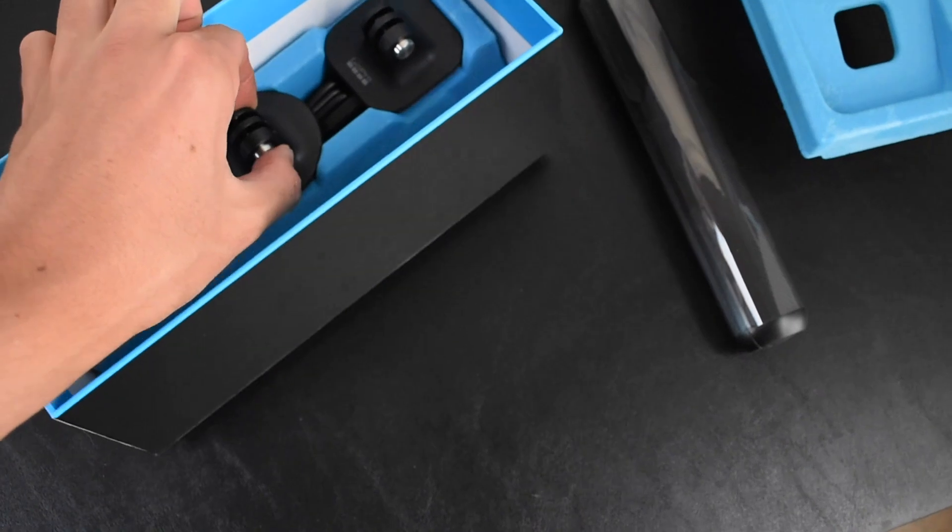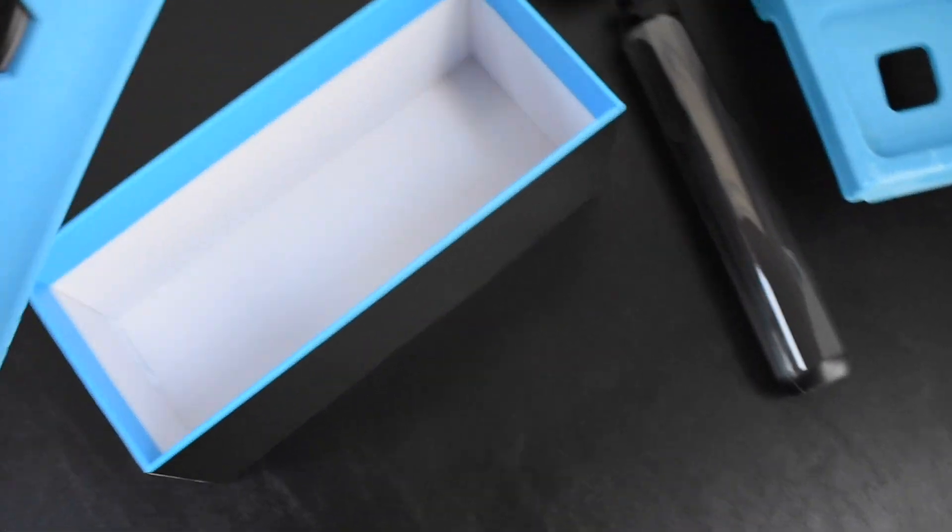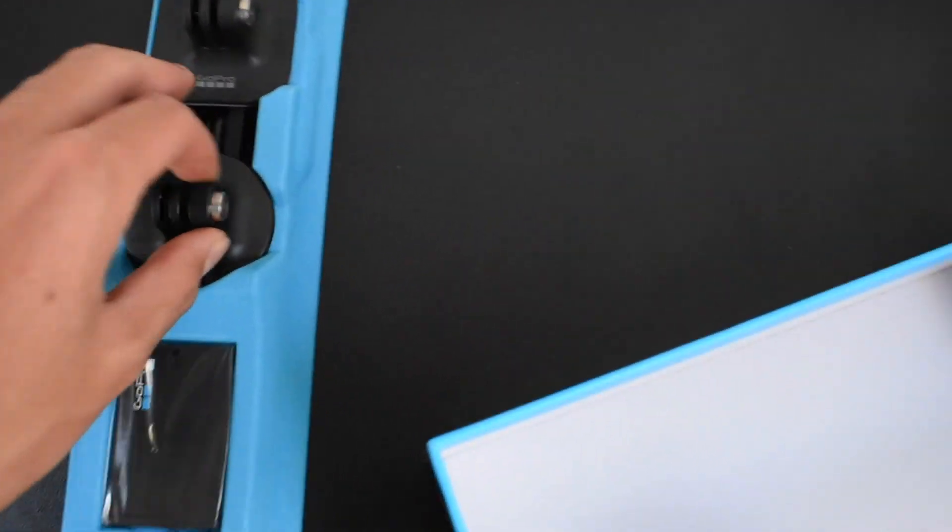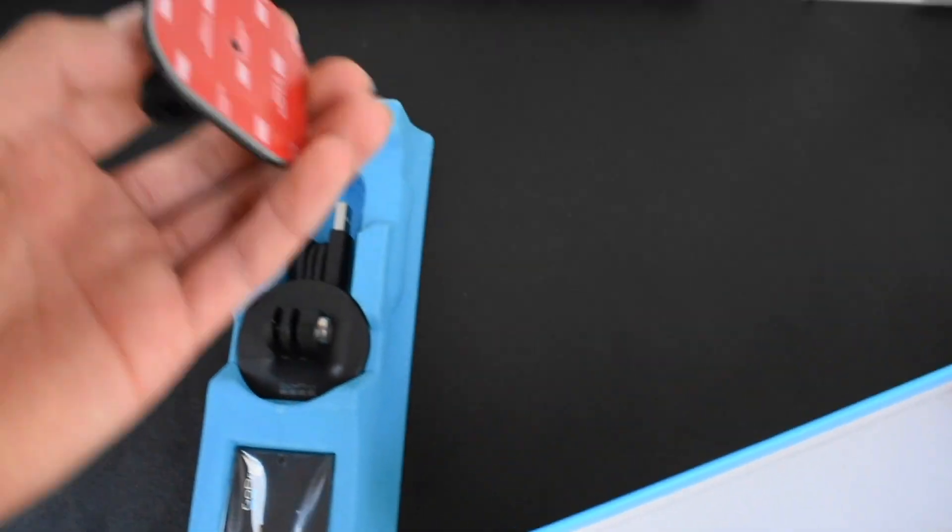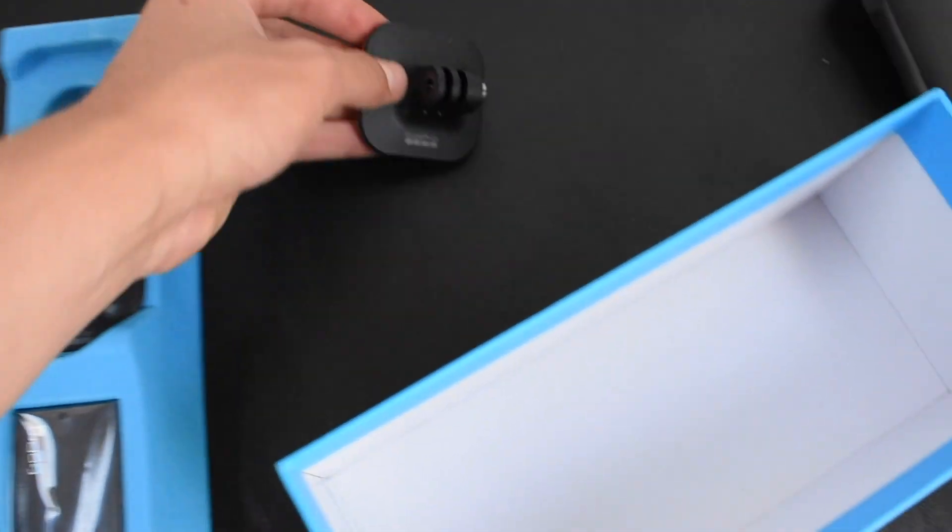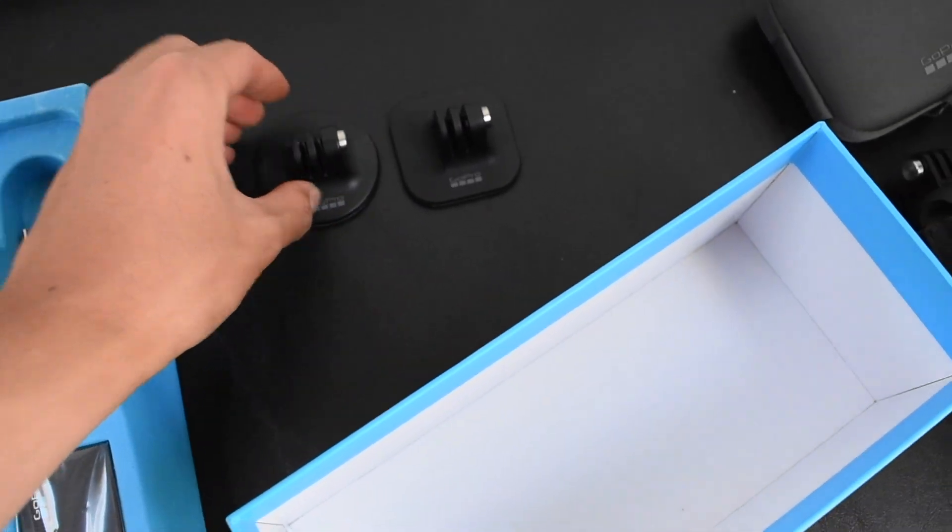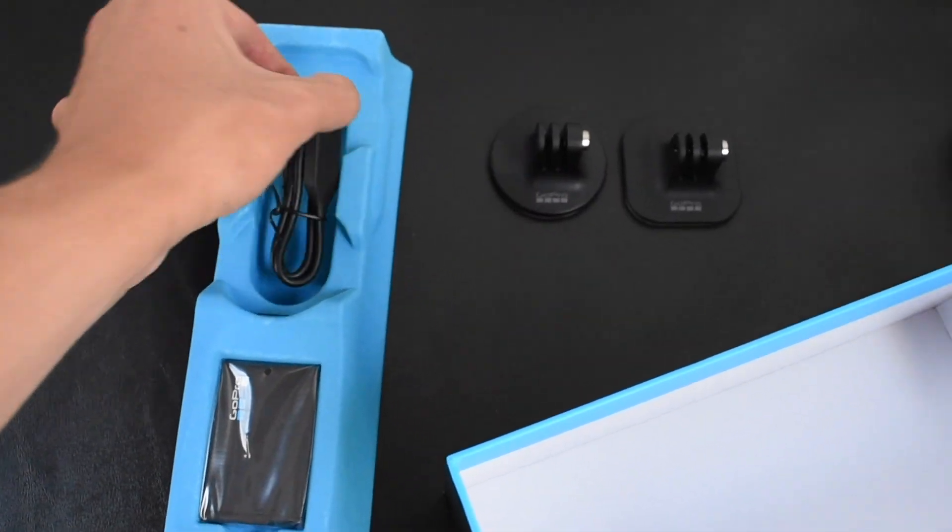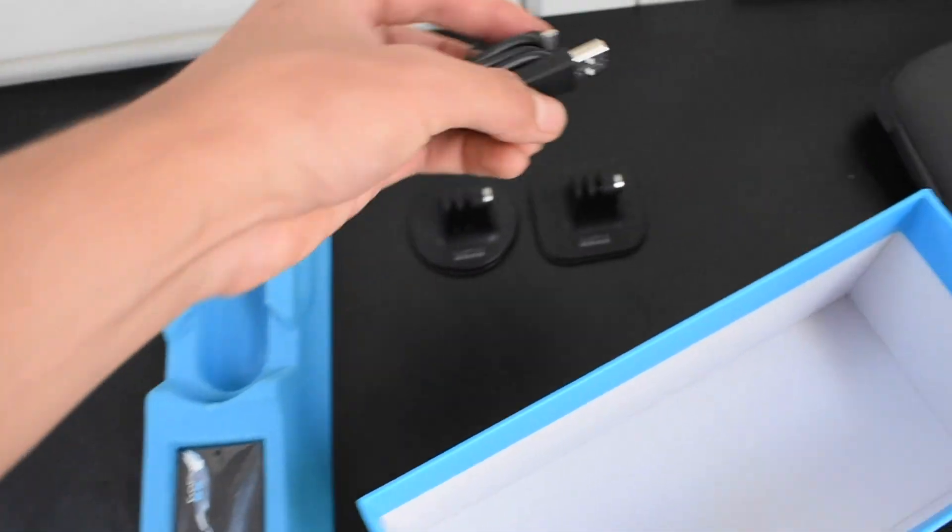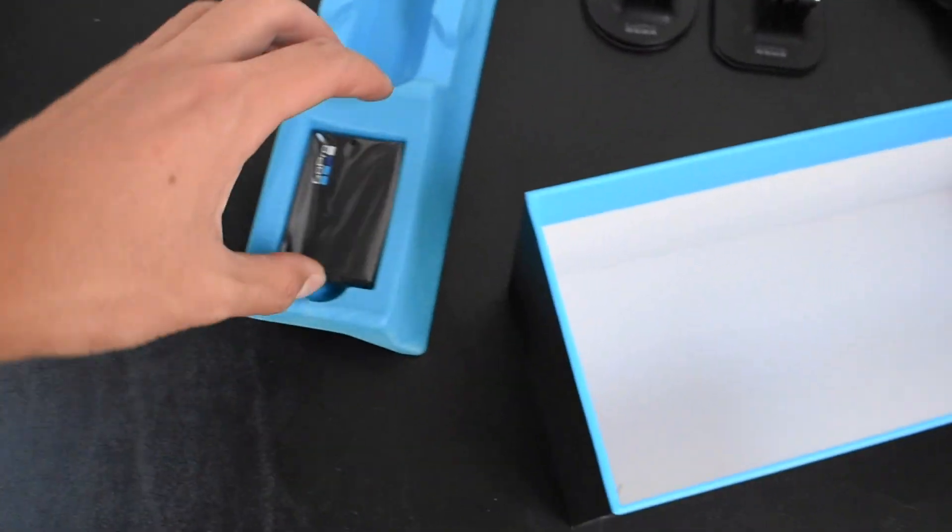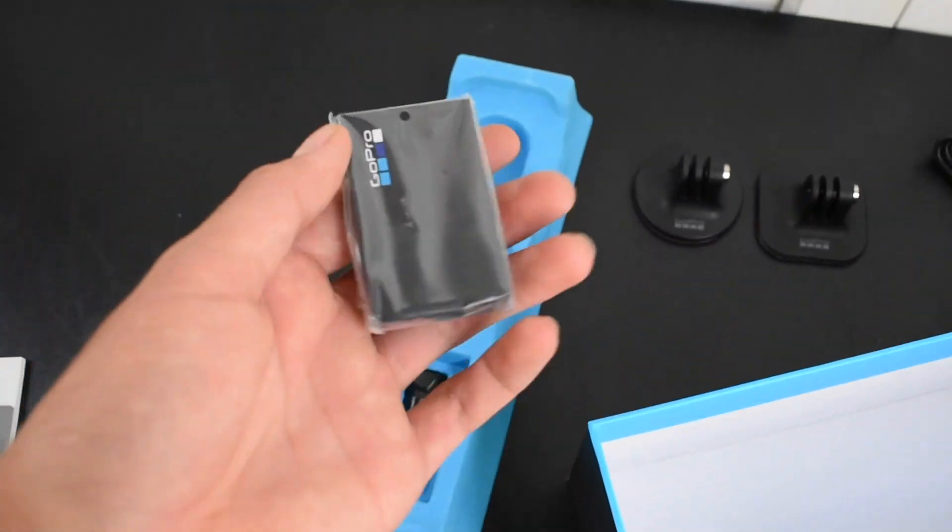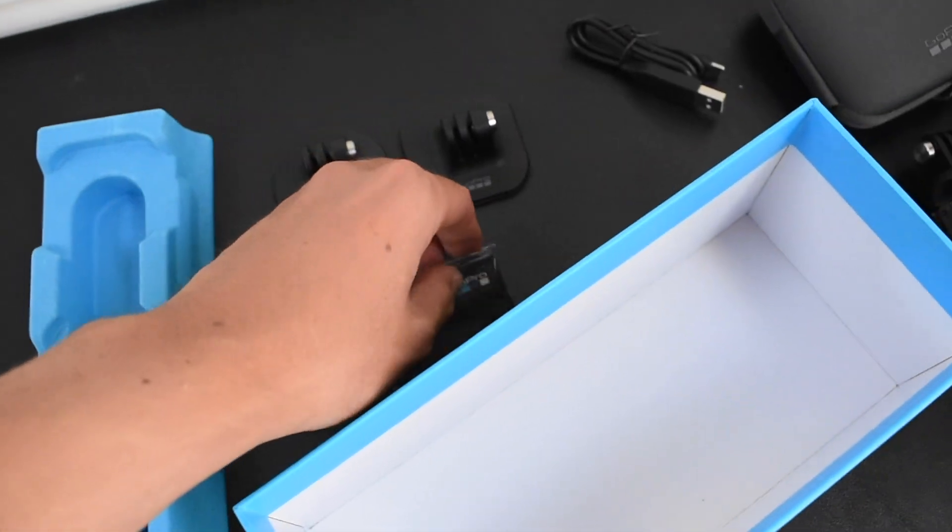And, oh, it's connected. Here's the flat adhesive mount. And the curved adhesive mount. Charge port cord-ish thing. A battery. It's definitely bigger than the Hero 6.